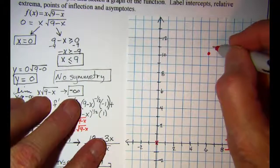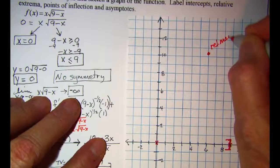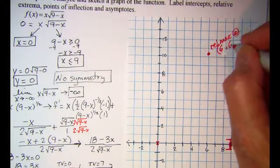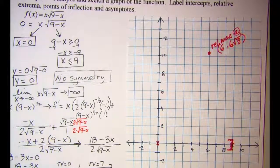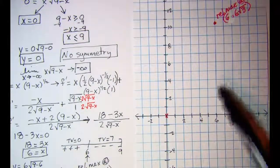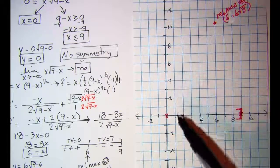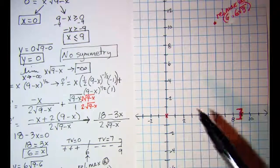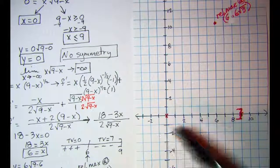I have a relative max. Now I know that my graph is going to come from this point, hit a max up here, go through (0, 0) and then head toward negative infinity. I'm going to calculate a few values to see where.